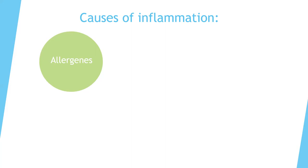It doesn't have to be lactose or gluten — it can be other proteins in milk, proteins or other compounds found on grains and legumes. It can also be chemicals, since mainly imported vegetables and fruits are sprayed with pesticides.